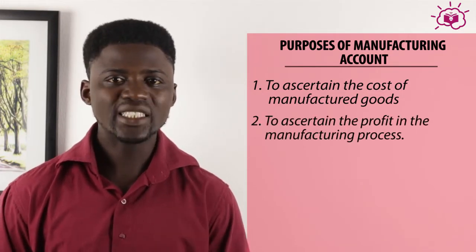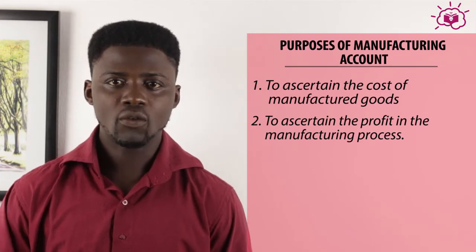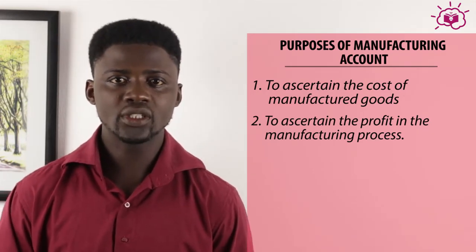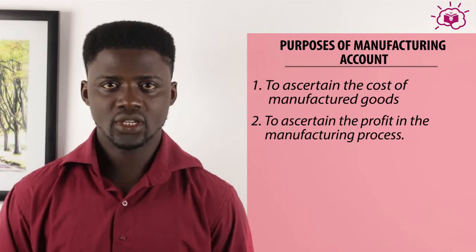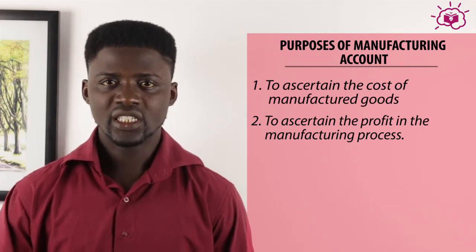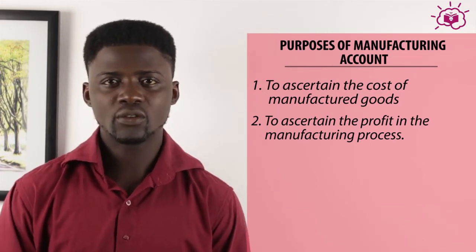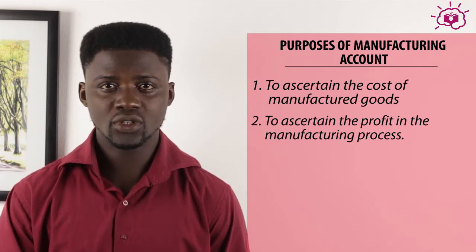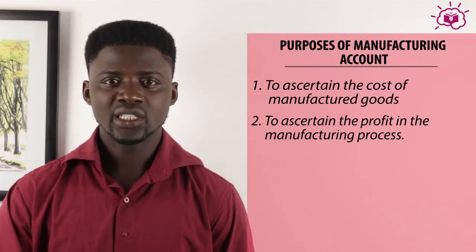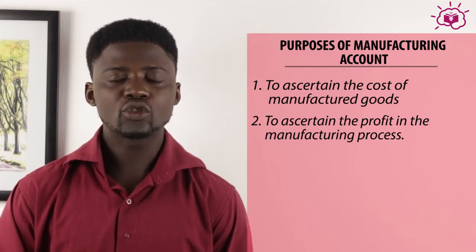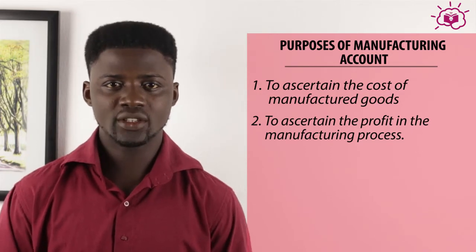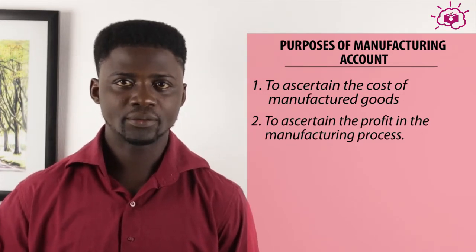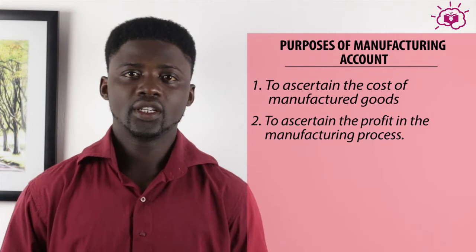Number two: to ascertain the amount of any profits on the manufacturing process. That means in the process of transforming raw materials to finished goods and making sales, certain amounts must be ascertained, and so manufacturing accounts are also prepared in order to ascertain them.